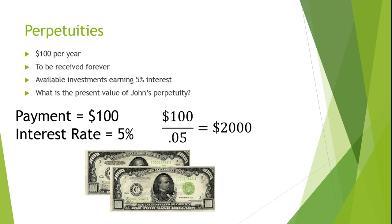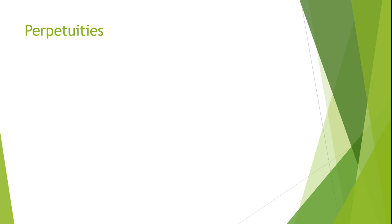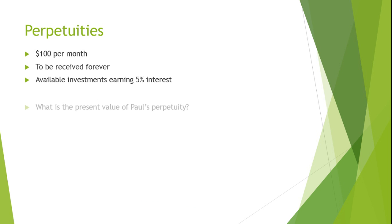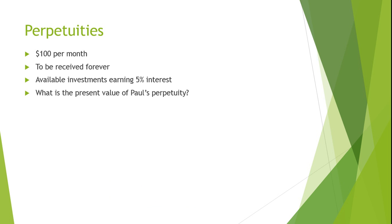Now let's try a slightly more difficult example. Suppose Paul is to receive $100 at the end of every month for the rest of his life, and there are available low-risk investments currently earning 5% interest annually. What is the present value of Paul's perpetuity?